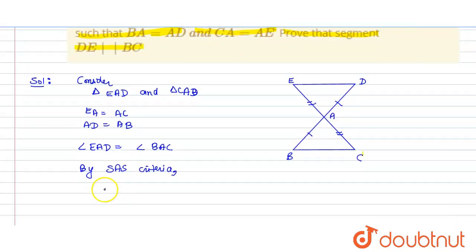Now, by side-angle-side congruence criteria, we get that triangle EAD is congruent to triangle CAB. If they are congruent, then their corresponding angles are equal. That is, angle AED will be equal to angle ACB, and angle ADE will be equal to angle ABC.